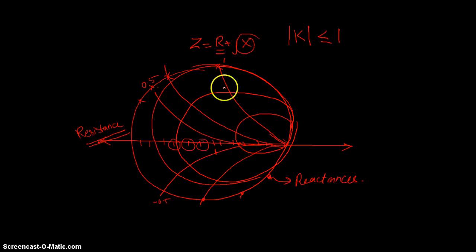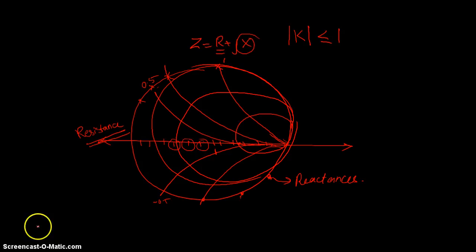This is how you plot an impedance on a Smith Chart. That's the end of part 2.